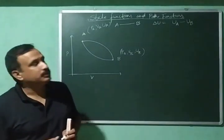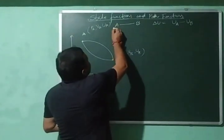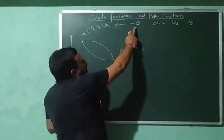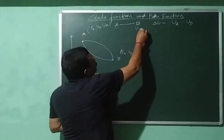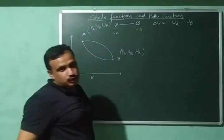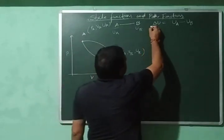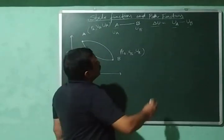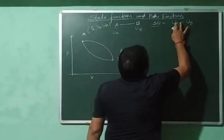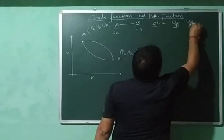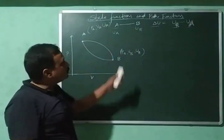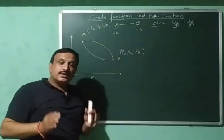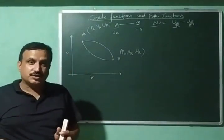Let us explain it with an example. Consider the process in which A is being converted into B, where UB is the internal energy of B. Then the change in internal energy will be equal to UB minus UA — that is, final minus initial. This will be the change in internal energy. Let us now discuss how internal energy is a state function.